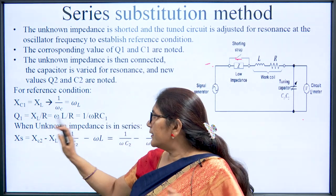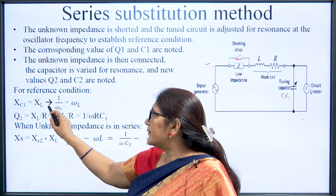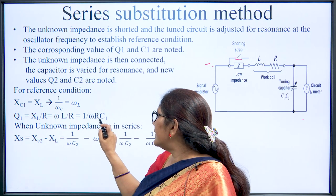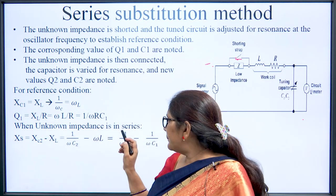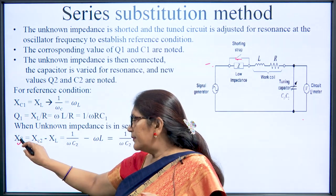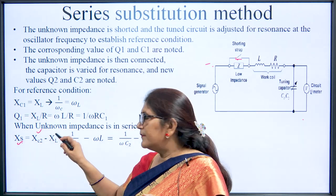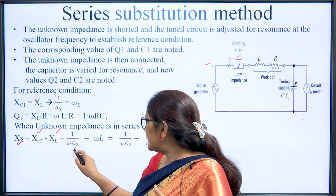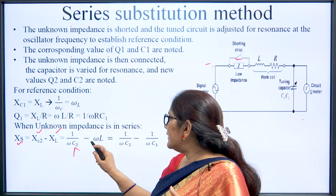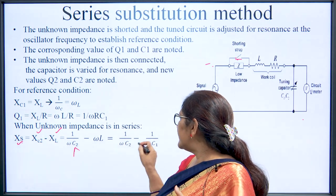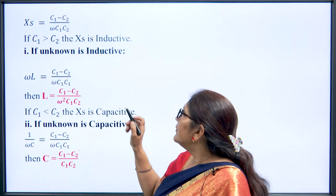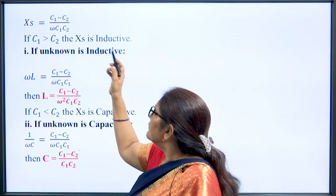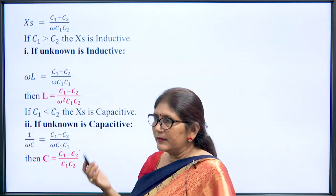At first resonance (circuit only): XC = XL, so 1/(ω·C1) = ωL and Q1 = 1/(ω·C1·R). When the unknown impedance is connected in series, the unknown reactance equals 1/(ω·C2) − 1/(ω·C1). Therefore the unknown reactance is (C1 − C2)/(ω·C1·C2). If C1 > C2, the component is inductive; if C1 < C2, the component is capacitive.